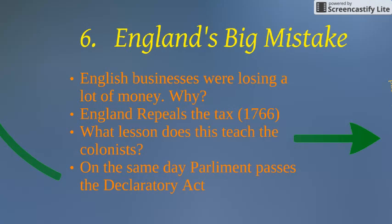Parliament kind of makes a big mistake here. It's not actually the colonists boycotting that pressures Parliament the most — it's English business owners, who by the way do vote for people in Parliament. They're losing lots of money because the Sons of Liberty and others have done a good enough job boycotting British goods. So British business owners go to Parliament and say the Stamp Act has got to go.